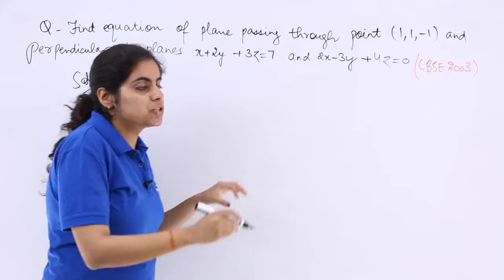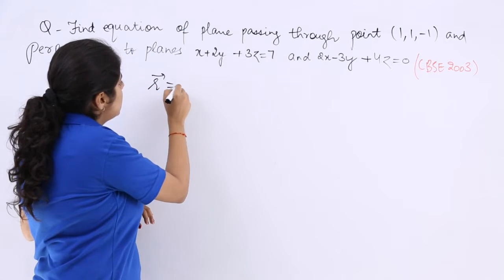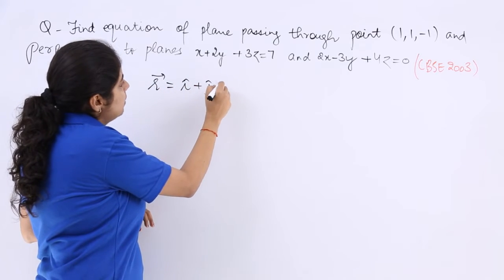Passing through the point means the position vector has to be found out. Now it is i plus j minus k vector.